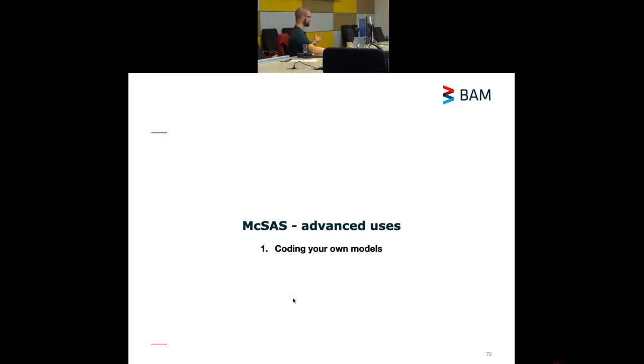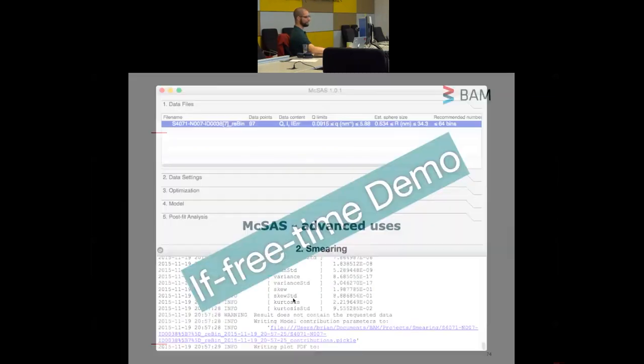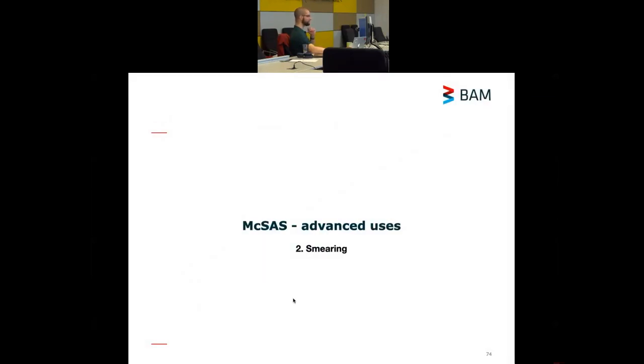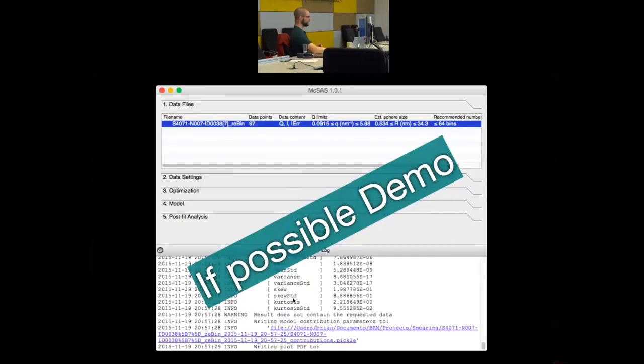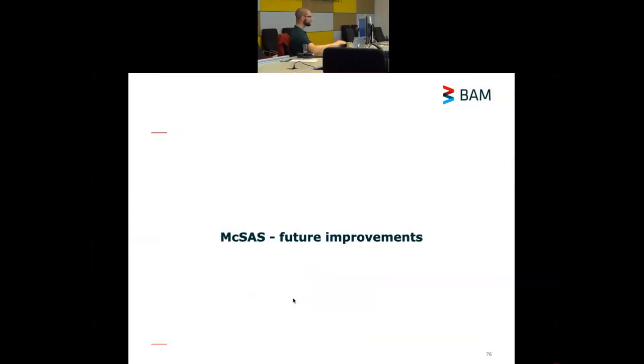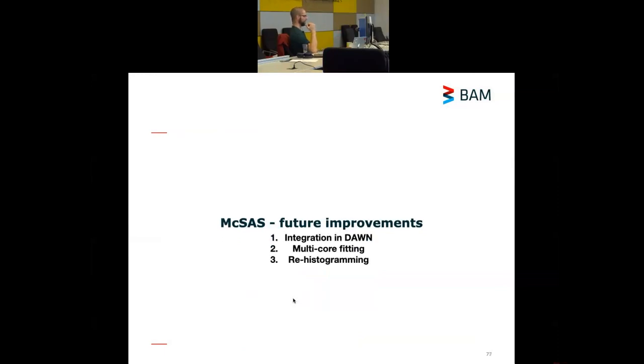You can code your own models in McSass. If there's a shape or a structure that you want to fit in a Monte Carlo approach, you can add your own models to the library. You can add smearing. So, if you have slit-smeared systems, or pinhole-smeared systems, and you would like to include that instrumental smearing in your fit, McSass lets you do that. And with McSass 3, at least we have multicore fitting and rehistogramming implemented there as well.